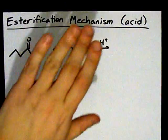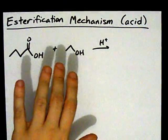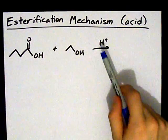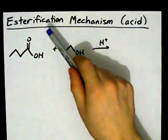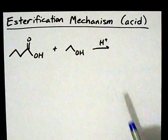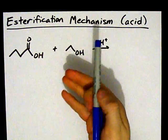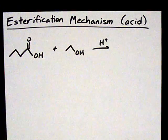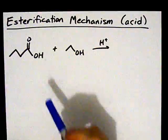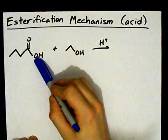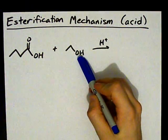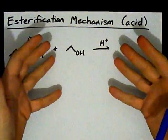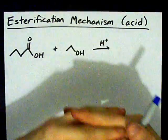Alright guys, unless you're in an organic chemistry course, you probably don't need to know the mechanism for forming esters. But let's talk about it because there are some organic chemists out there. What we've got here is a carboxylic acid and an alcohol — those are the ingredients to make an ester.